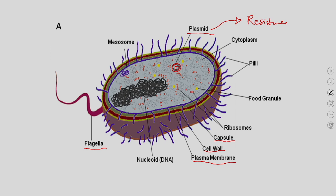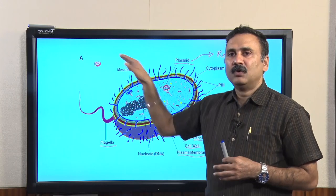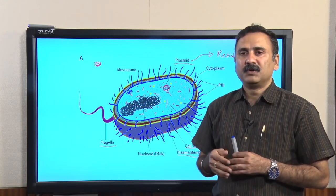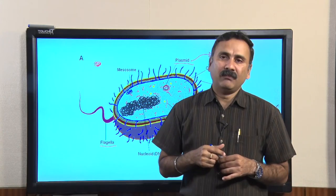For example, if you add a glucose molecule, it attracts the bacteria and the bacteria has to take that glucose molecule. In that process, the flagella will move and the bacteria will go toward that particular glucose molecule through a process known as chemotaxis.